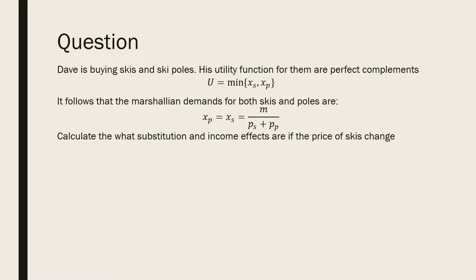So here's the question. Dave is buying skis and ski poles. His utility function for them are perfect complements. It follows that the Marshallian demands for both skis and ski poles are income M all over the price of skis plus the price of ski poles. Calculate what the substitution and income effects are if the price of skis change.